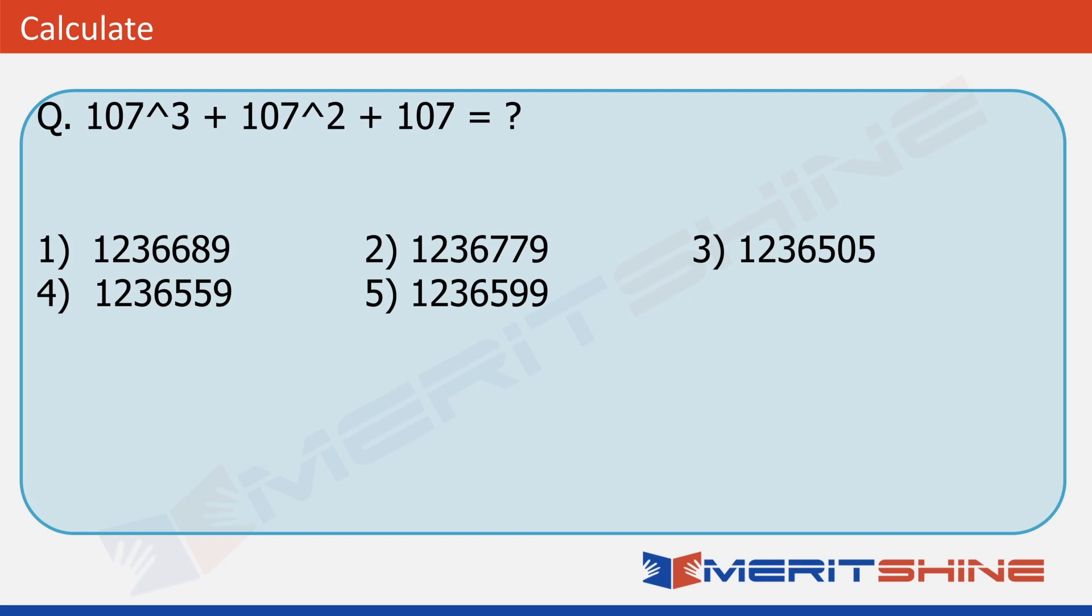Now, let us go to the next question. Again, this question is very simple. The last two digits for 107 cube will have to end in 43. For 107 square, it would end in 49 and 107 ends in 07. If you add these three, your last two digits would be 99, which is true only for option number 5. And hence, this is your answer.